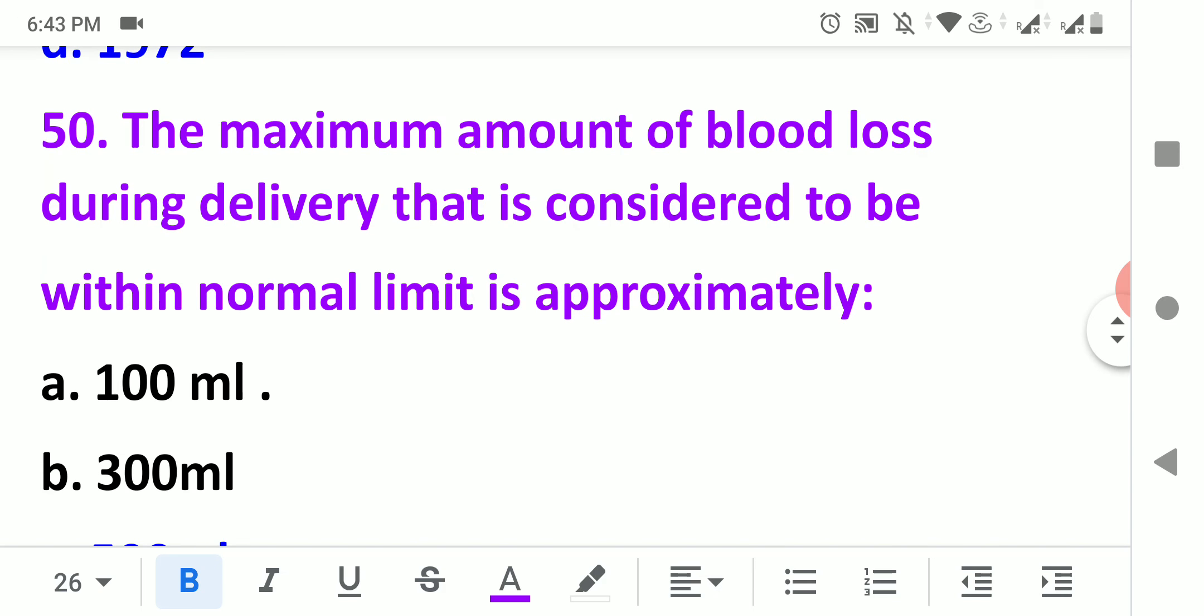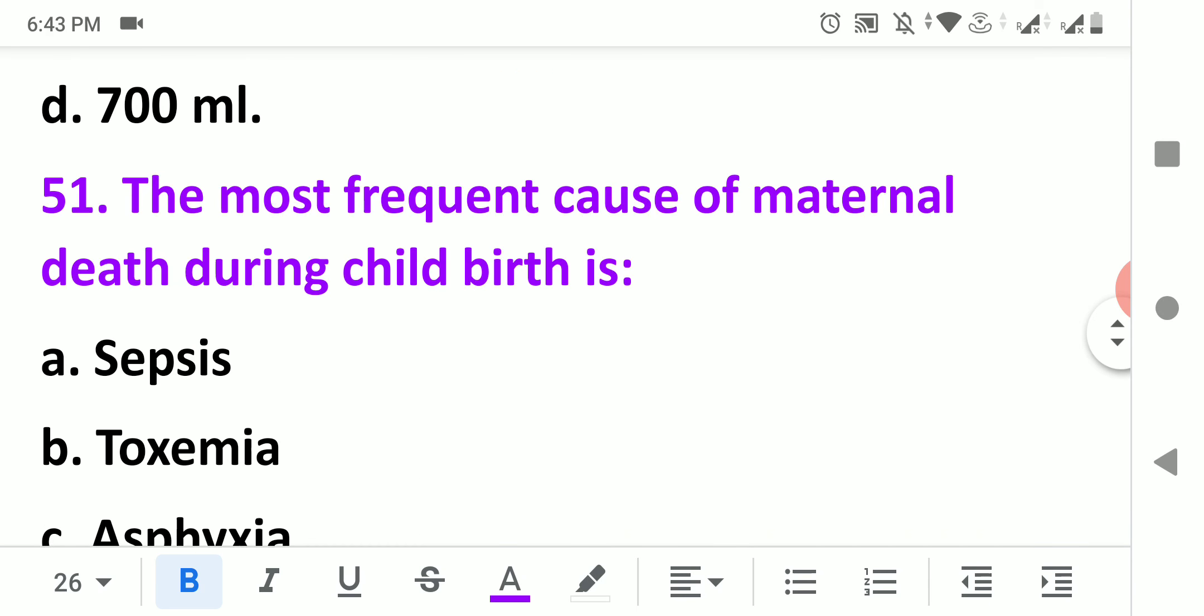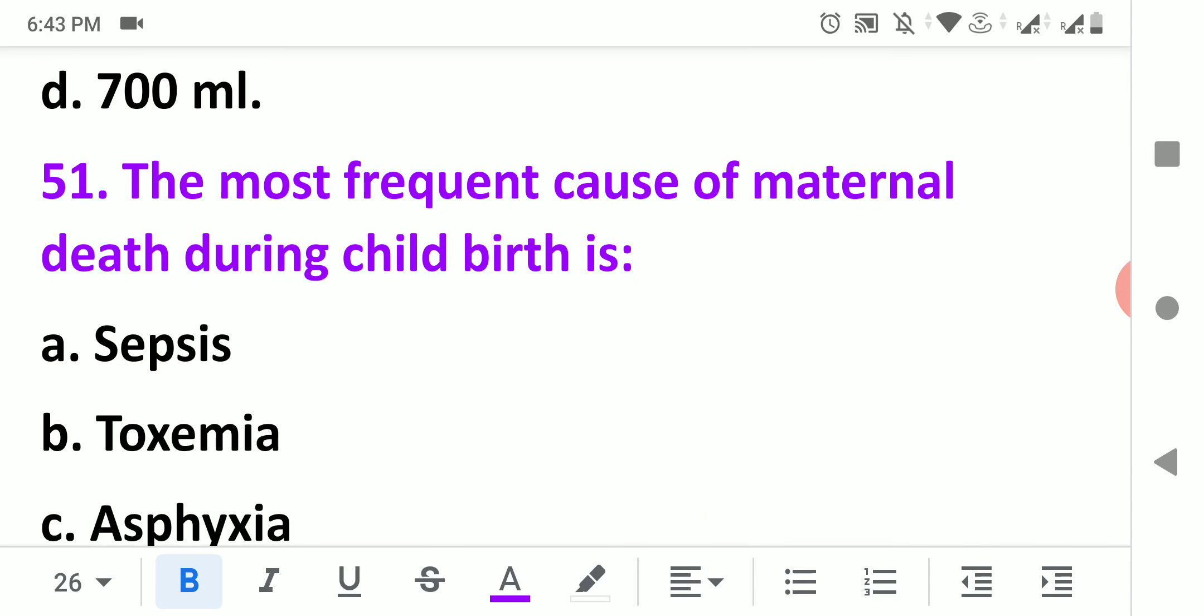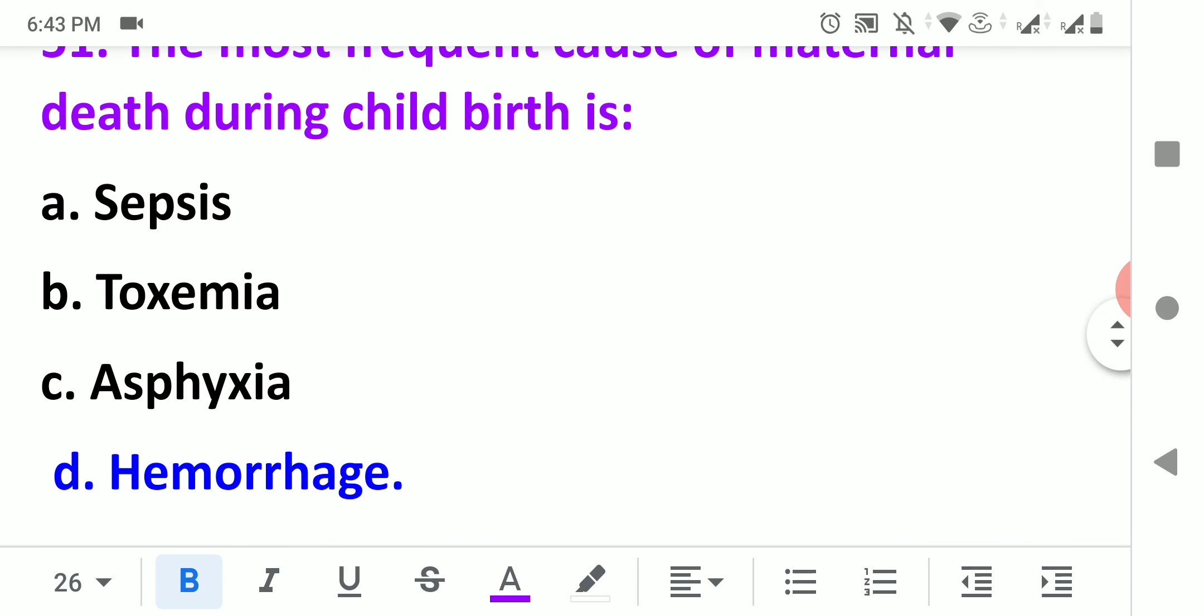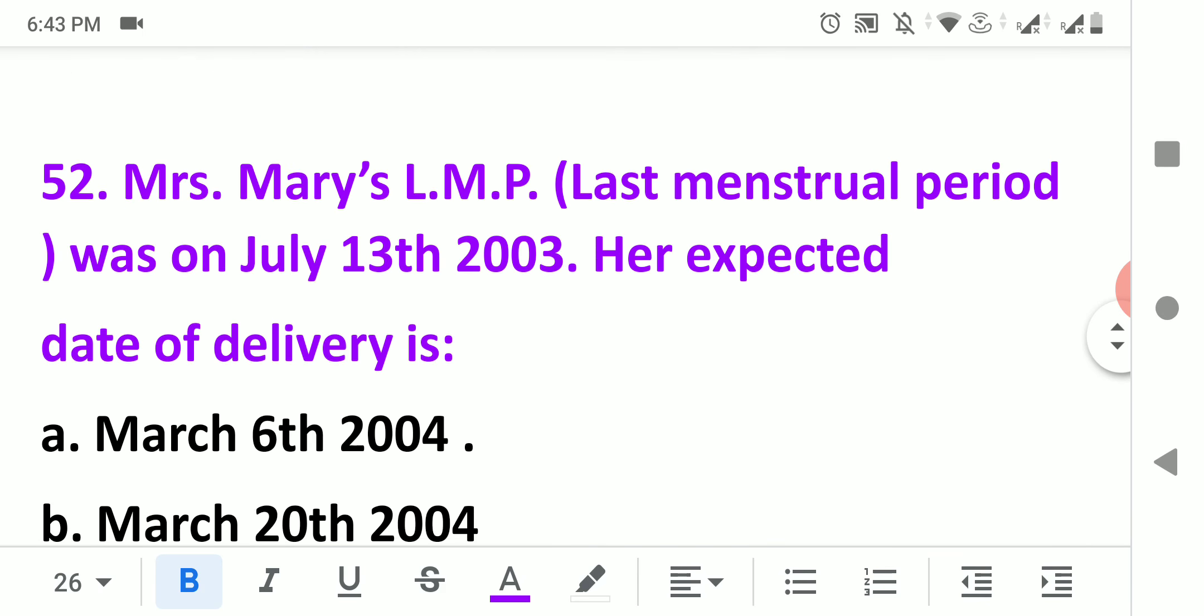The maximum amount of blood loss during delivery that is considered to be within normal limit is approximately 500 ml. The most frequent cause of maternal death during childbirth is hemorrhage.